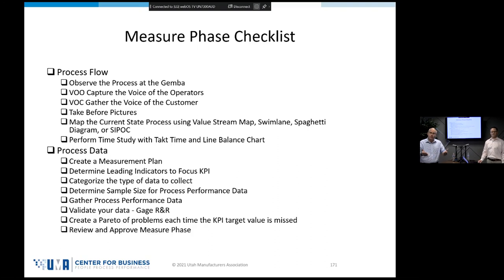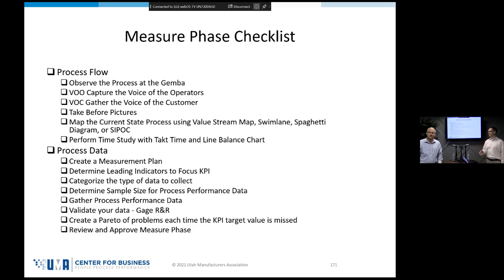For example, Gauge R&R is on this list, which we are going to talk about today. Gauge R&R is incredibly powerful within a certain set of parameters, but it's not something you'll use for every project. If you find something on the checklist that isn't applicable, skip it. Don't stress and feel like you have to do everything on the list. If it's listed as a core tool then it's got to get done, but Gauge R&R is one of those tools that only applies in some situations.